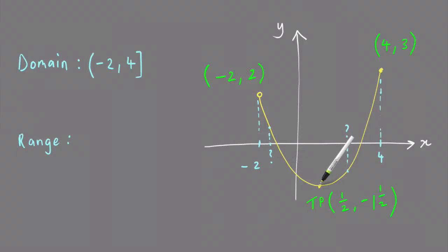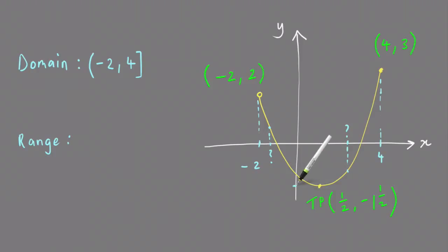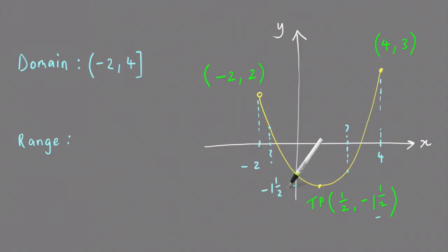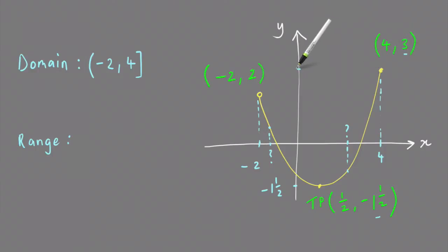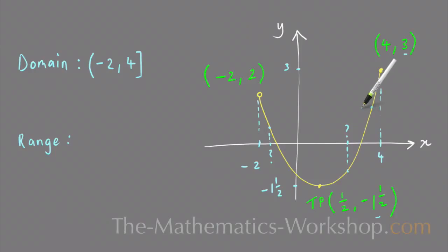To find the range you can do a similar thing. Start by looking for the lowest y value, which is at this turning point here, and that is minus 1 and a half — that's the y coordinate. Going up to the highest point on the graph, the y value there is 3, and I mark that in by going across.